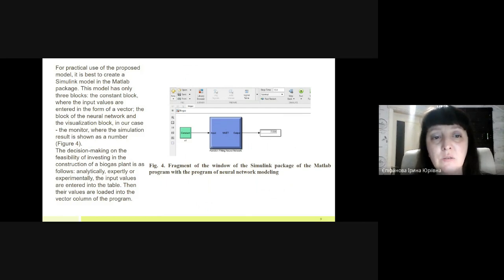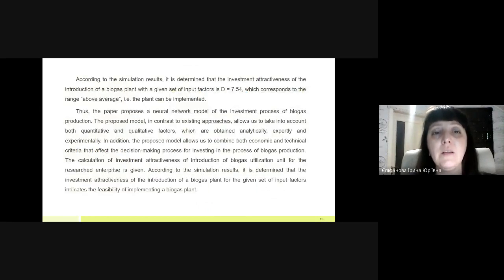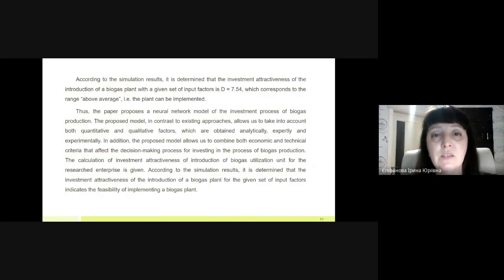The process is as follows: analytically, expertly, or experimentally, the input values are entered into the table, then their values are loaded into the vector column of the program. According to the simulation results, it is determined that the investment attractiveness of the introduction of the biogas plant with a given set of output factors will be 7.54, which corresponds to the range above average, so the plant can be implemented.